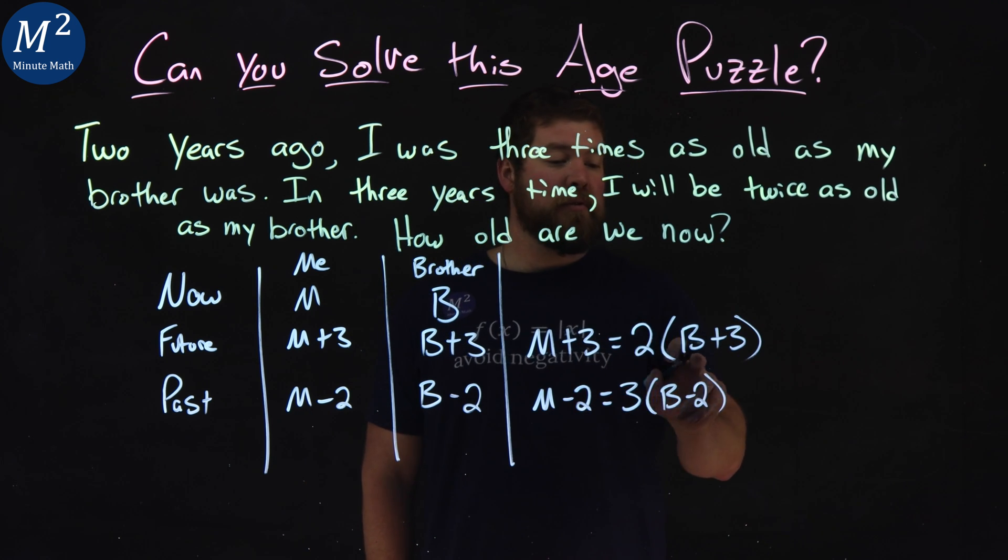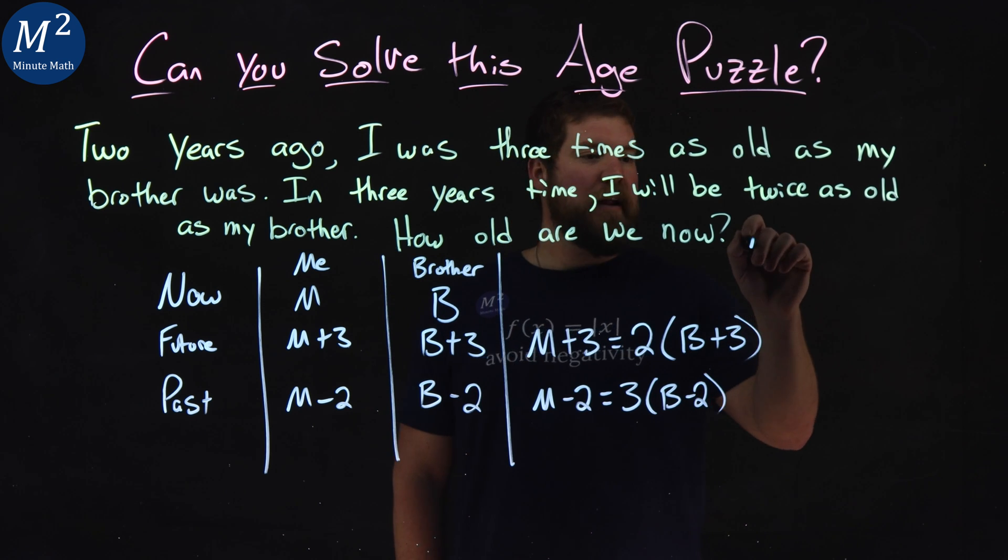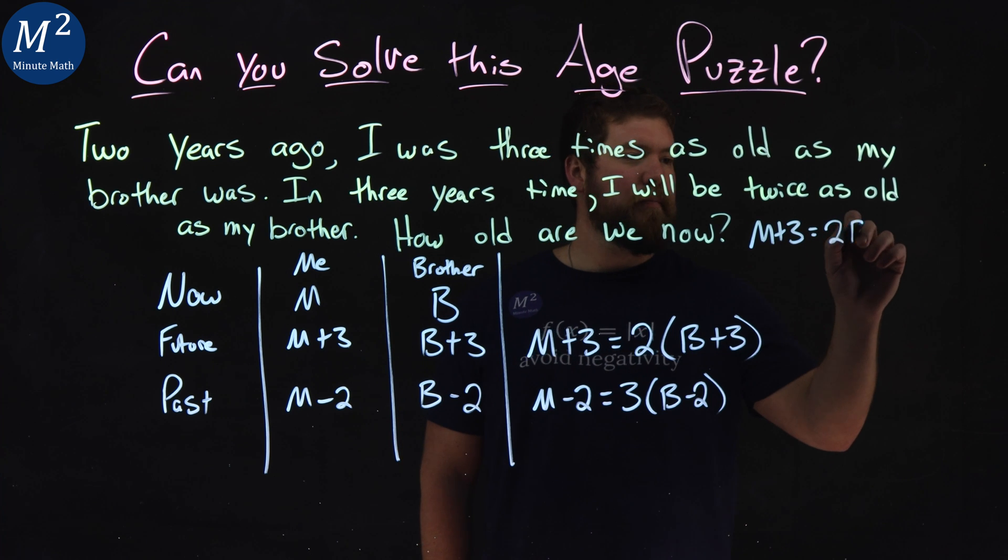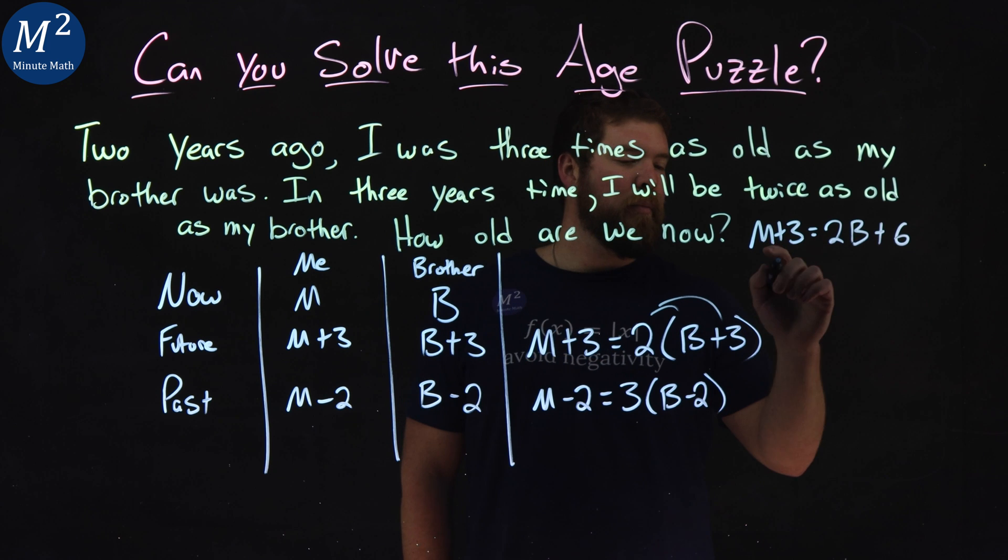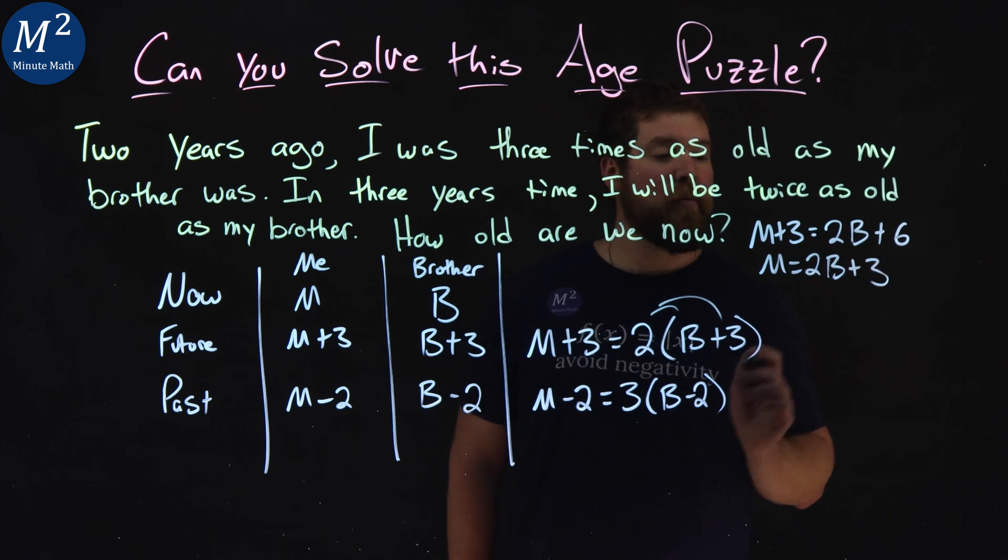So we have M plus three equals, distribute the two, two B plus two times three is six. Subtract the three from both sides, and M equals two B plus three.